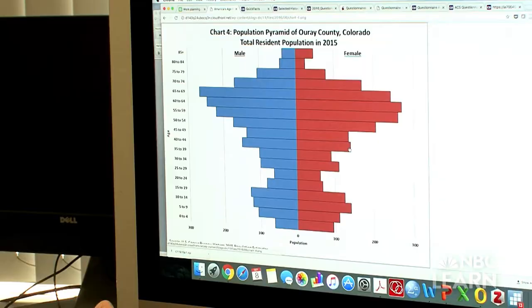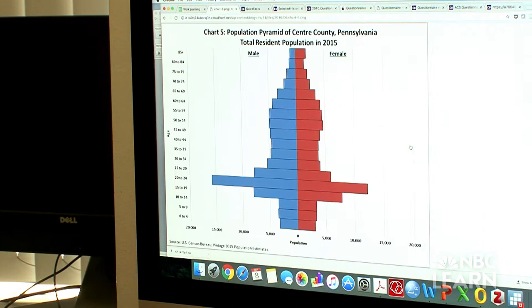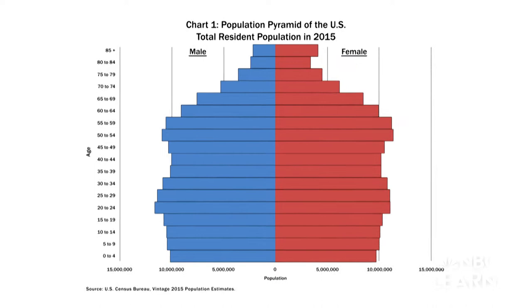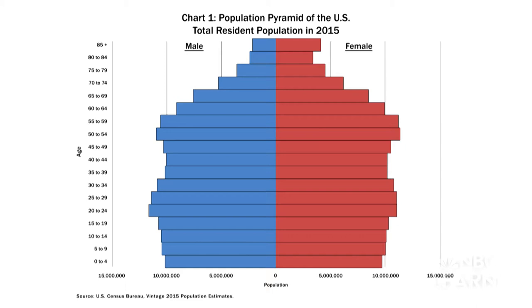A population pyramid is a really neat graphical representation of a population. This is an example of a population pyramid. What this does is it depicts the population in the United States at a particular time — here, the population of the United States in 2015. It shows the number of boys and men on the left side in blue, and then women in red.